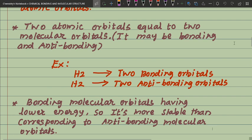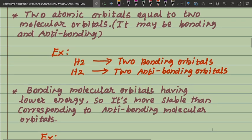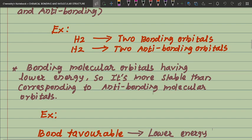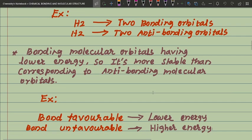There are two bonding orbitals and two antibonding orbitals. Bonding molecular orbitals have lower energy, so they are more stable than the corresponding antibonding molecular orbitals.